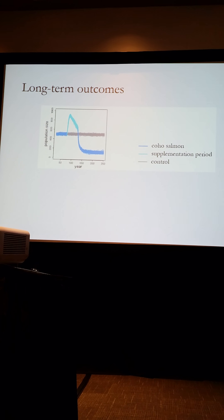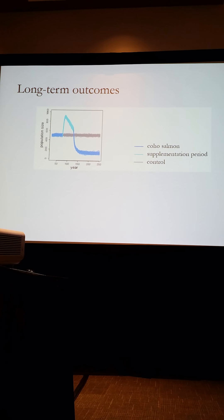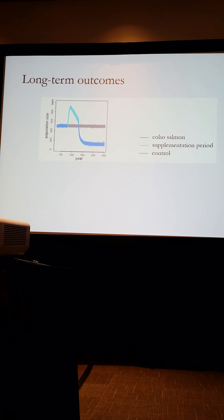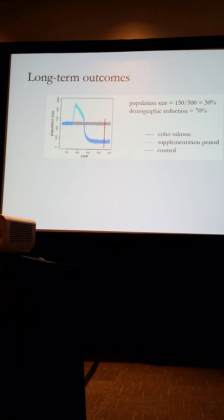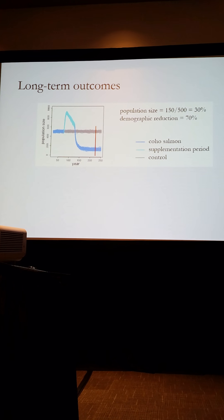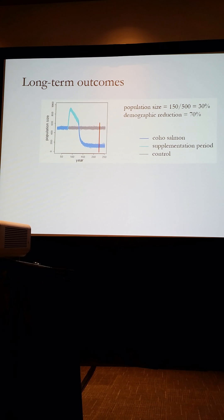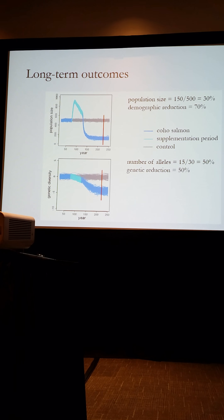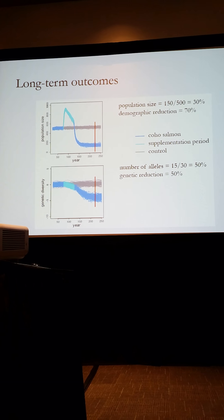To quantify the effects of supplementation, we used two parameters. The first was population size. This plot is showing 100 replicates of a supplemented coho salmon population overlaid on top of 100 replicates of a control unsupplemented coho salmon population. To calculate the effect of supplementation, we looked 100 years after the end of captive breeding and compared the population size in supplemented populations — around 150 in this example — to the control, which was about 500. So we'd say supplementation resulted in a 70% demographic reduction. We applied a similar approach when looking at effects on genetic diversity, comparing the number of alleles in supplemented versus unsupplemented populations across all 50 neutral microsatellite loci.